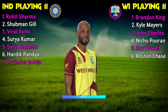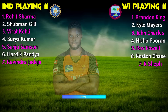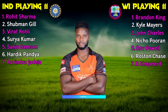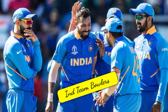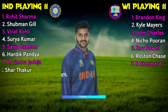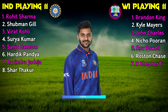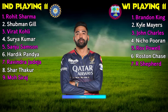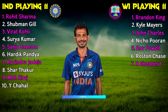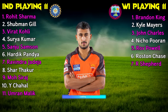West Indies Team continued: Number 6: Roston Chase, All-Rounder. Number 7: Romario Shepherd, All-Rounder. India Team Bowlers: Number 8: Shardul Thakur, All-Rounder. Number 9: Mohammed Siraj, Fast Bowler. Number 10: Yuzvendra Chahal, Spin Bowler. Number 11: Umran Malik, Fast Bowler.